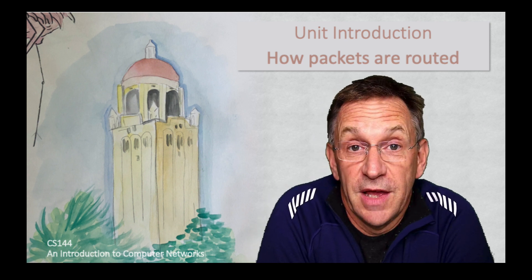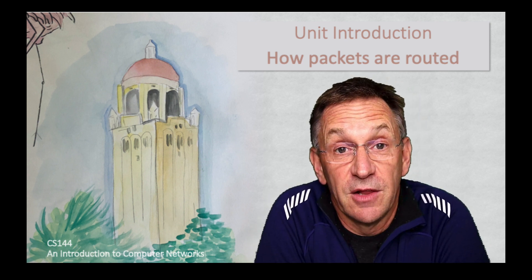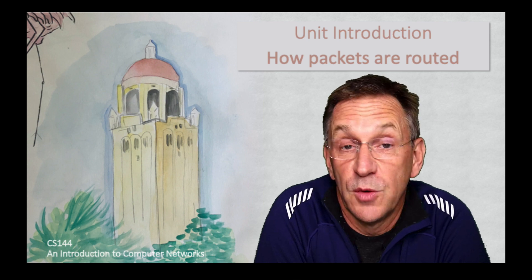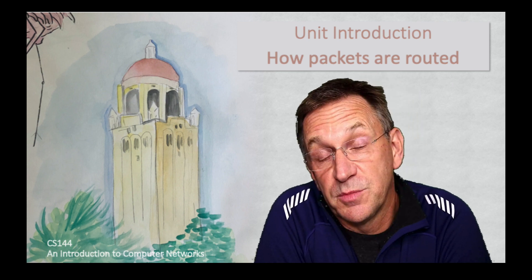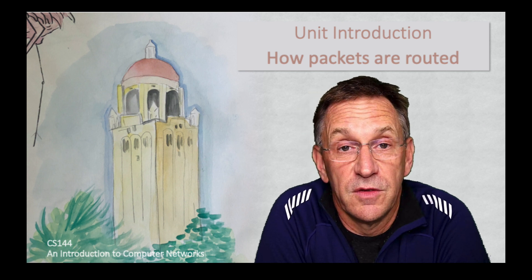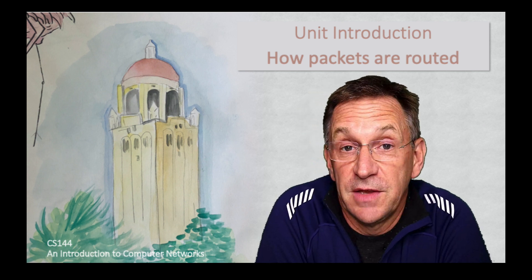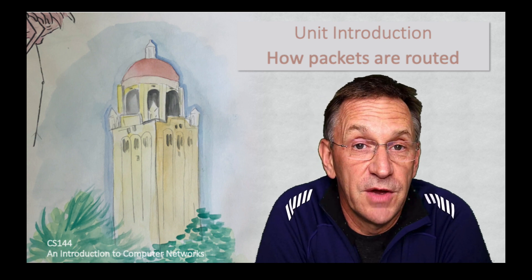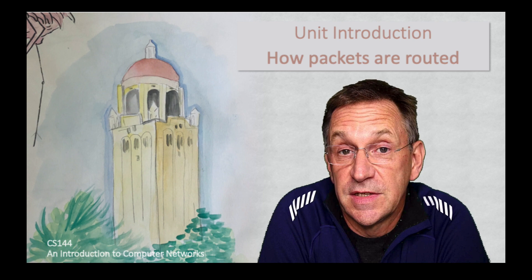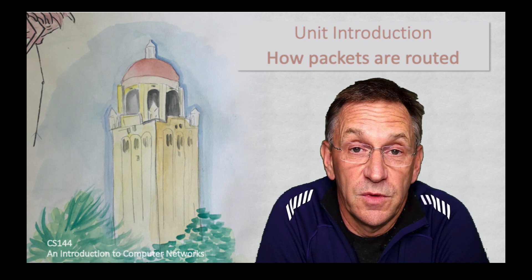The original algorithm that was used was a distributed algorithm called the Bellman-Ford algorithm, and we'll be learning about this one first. This has been replaced more or less by an algorithm called the shortest path first algorithm, originally invented by Dijkstra. This is a centralized algorithm where each router figures out the topology and then figures out the path that its packets will take.